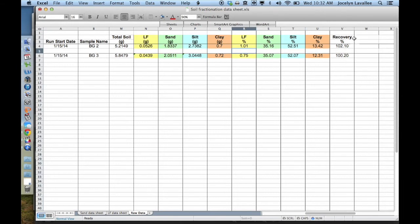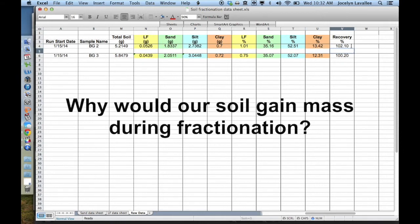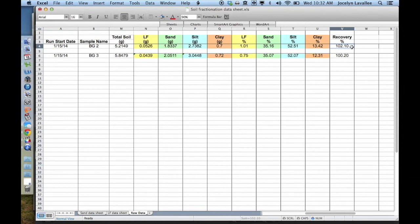This represents whether or not we recovered all of our soil in our fractions and can tell us whether we lost some in the process, or, in this case, we may have gained some mass. Why might that happen? Well, one common thing that happens during this fractionation procedure is that SPT isn't fully rinsed out of our soil. If you remember, SPT is quite dense, and so even a little bit of SPT can add some percent to your percent recovery because of that added mass. If your percent recovery is too high, it is a good idea to redo the procedure and try to get your percent recovery closer to 100 as we did for this sample.